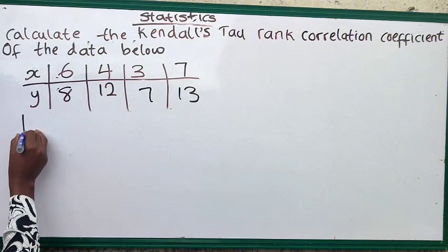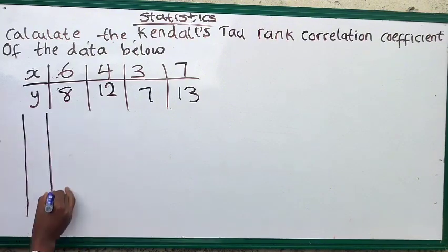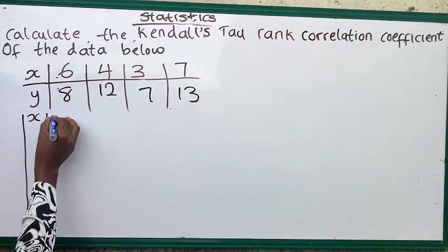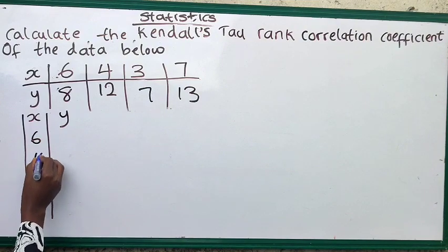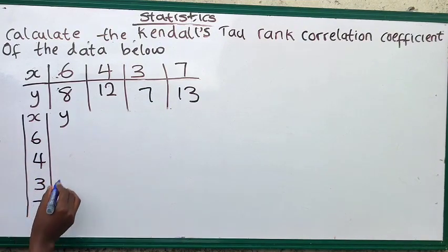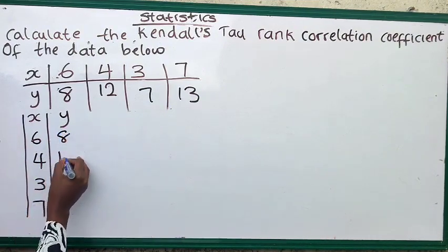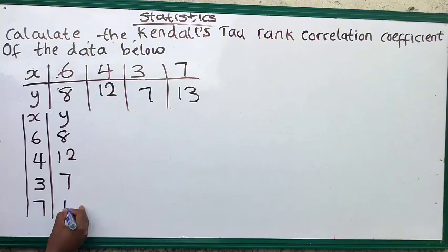Let me go. We have our x and y. First one we have 6, 4, 3, 7, and 1, 2, 3, 4, 3, 5, 8, 12, 7, 13.